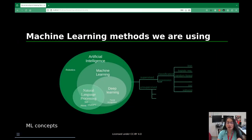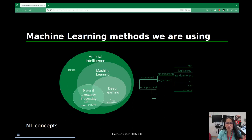What kind of machine learning methods are we using? Machine learning and artificial intelligence cover a huge spectrum of things — there are many methods and techniques. We are in the area of machine learning that doesn't involve robotics, but we do use things from natural language processing and deep learning to do the work we want to do.